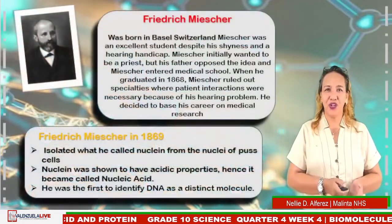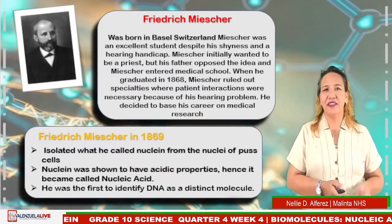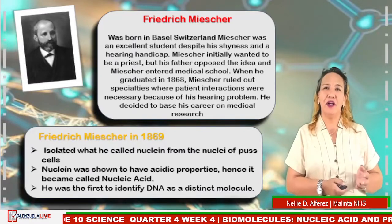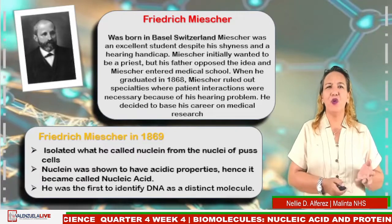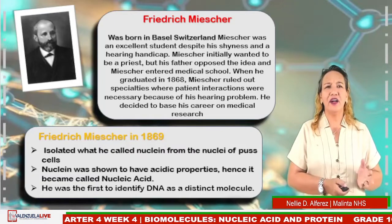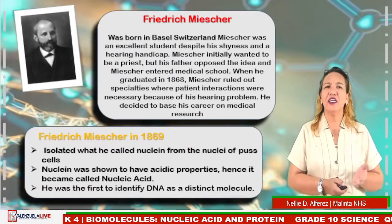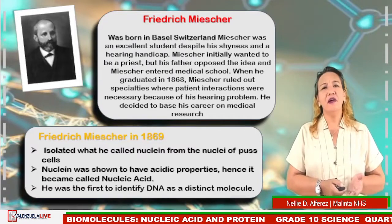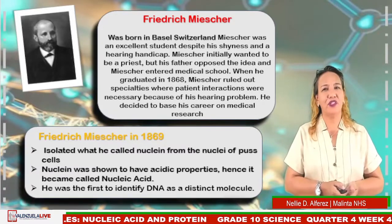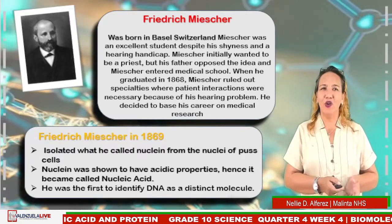Friedrich Miescher was born in Basel, Switzerland. Miescher was an excellent student despite his shyness and hearing handicaps. Miescher initially wanted to be a priest, but his father opposed this, and Miescher entered medical school. He graduated in 1868. Miescher ruled out specialties where patient interactions were necessary because of his hearing problem, so he decided to base his career on medical research.